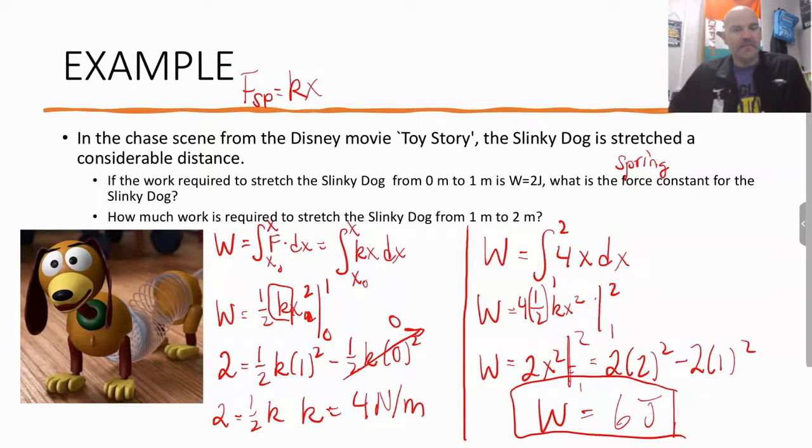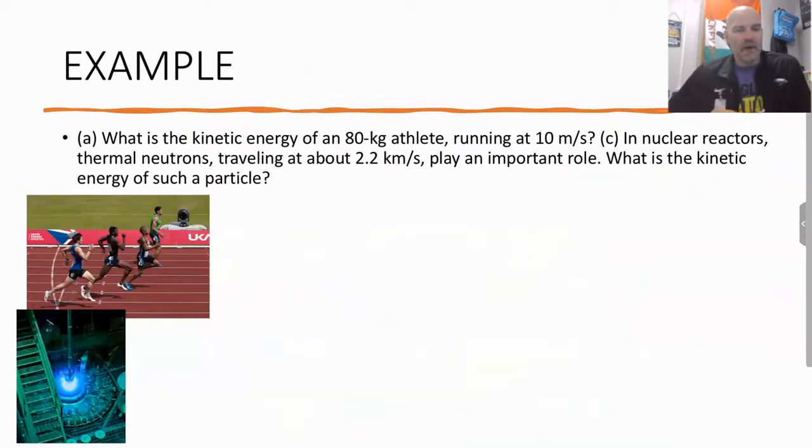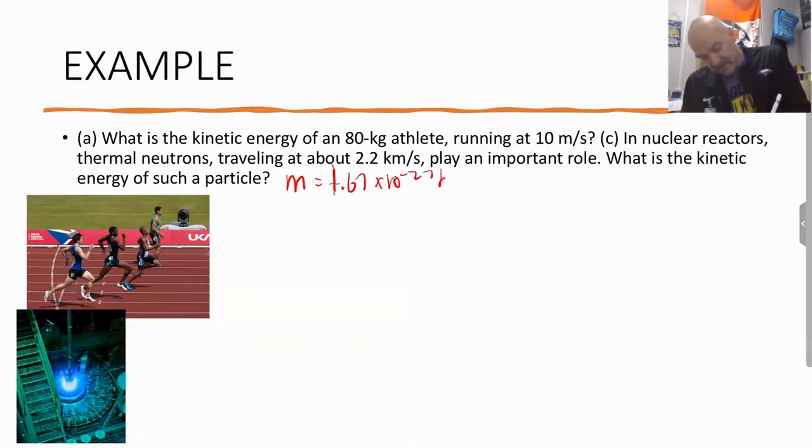Now let's look at an example problem for kinetic energy. Part a: what is the kinetic energy of an 80 kilogram athlete running at 10 meters per second? And part b: in nuclear reactors, thermoneutrons travel about 2.2 kilometers per second and play an important role. What is the kinetic energy of such a particle? The mass of a neutron is 1.67 times 10 to the negative 27 kilograms, and the speed is 2.2 times 10 to the 3 meters per second.